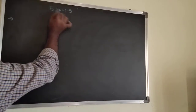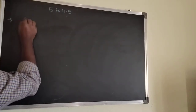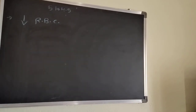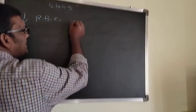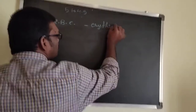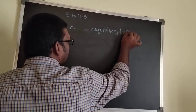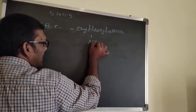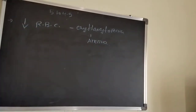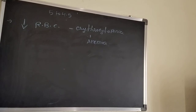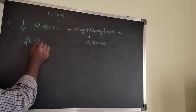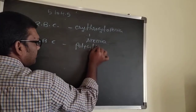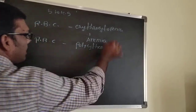A decrease in RBC count per cubic millimeter is called erythrocytopenia and leads to anemia. Anemia indicates destruction of RBC. Abnormal increase in production of RBC is called polycythemia.